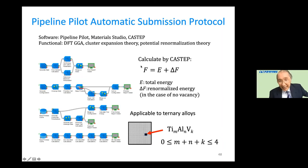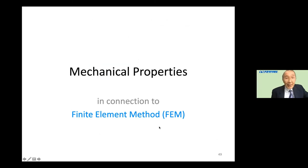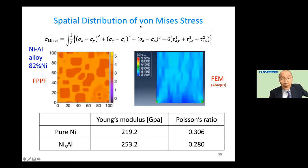The calculation uses CASTEP for the first principle calculation, and this automation protocol is applicable to arbitrary ternary alloys. I will briefly explain the mechanical properties in connection to the finite element method. This is the spatial distribution of von Mises stress — the final result of the FPPF at the 82% nickel case, which is then inserted into the FEM finite element method program Abaqus, supported by the DASO system.